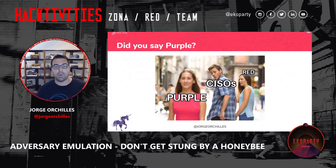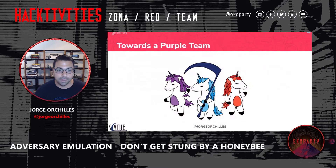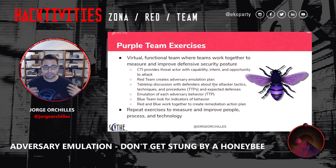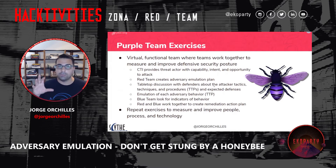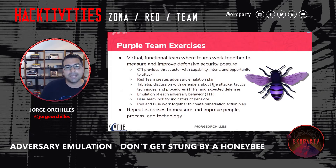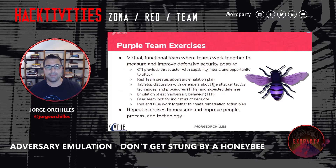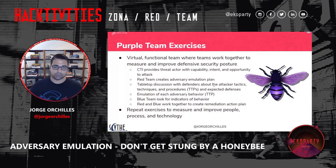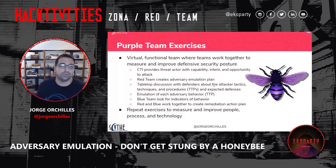You don't have to wait for that one-year engagement to see how you did or how you improved — you can now measure yourself more. A purple team is a virtual team: we take the red team, the blue team, and they work together. It's a virtual team where we work together to measure where we stand and improve. It always starts with cyber threat intelligence.